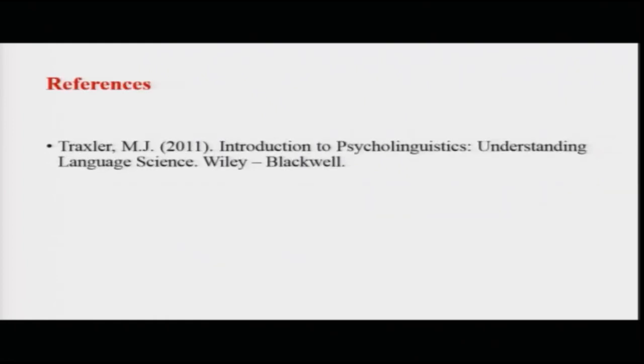That covers the lexical access models. We have talked about three generations: the first generation had the logogen model and Forbes model; the second generation had trace and cohort; the third generation has the simple recurrent network and the distributed cohort model. These are different theoretical perspectives on how lexical access actually works - none of them is entirely complete, but they offer different ways of understanding this process. Thank you for today; we will talk more about words in the next lecture.